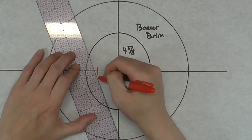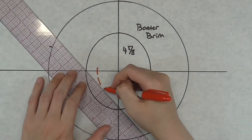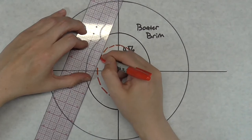On the brim, add 3 quarter inch seam allowance to the inside of the head size line. This helps us attach the crown later.